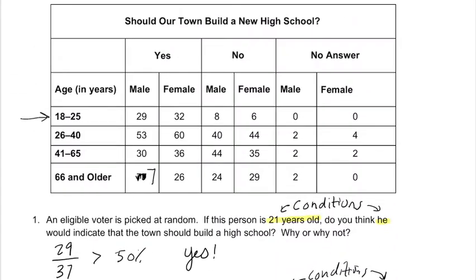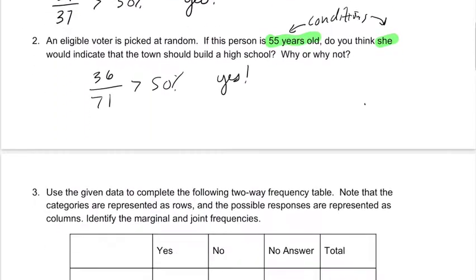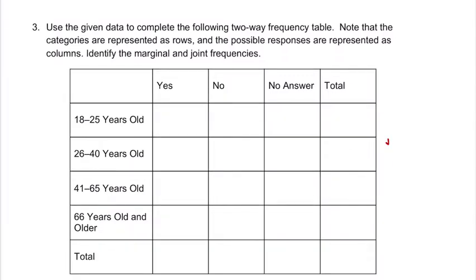We look at our first age range, 18 to 25. I'm combining all of my yeses here, which would be 61, right, 32 plus 29, and all of the noes, 14, and all of the no answers. And then entering those numbers in here, right, we've got 61, 14, and 2. All together, that's 75.